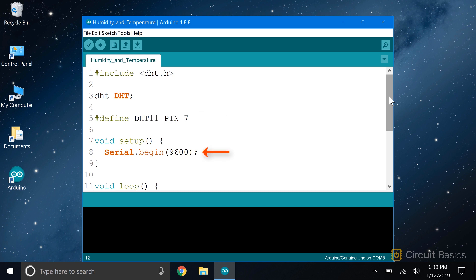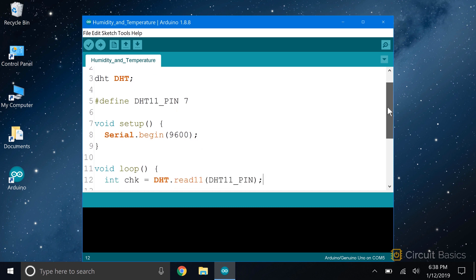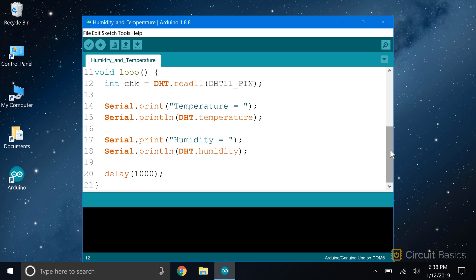We're going to output the temperature and humidity readings to the serial monitor, so we initialize it in the setup section. We don't need to use the pin mode function here. It's already set in the library source file. In the loop, the first thing we do is declare a local int variable called chk. Read11 is the function that reads the DHT11's humidity and temperature measurements. So this will take a reading from the DHT11_pin constant, pin 7, and store the information in the chk variable.